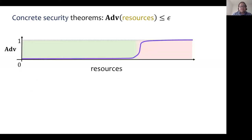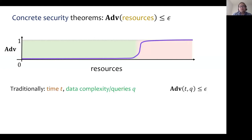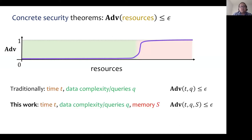In general, concrete security theorems attempt to prove an upper bound on the advantage of an adversary in breaking security in terms of the resources of the adversary. In most prior work, the resources considered are an adversary's time complexity and data complexity, or the number of queries. In this work, we additionally consider the adversary's memory as a resource.